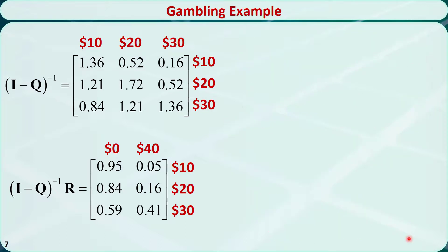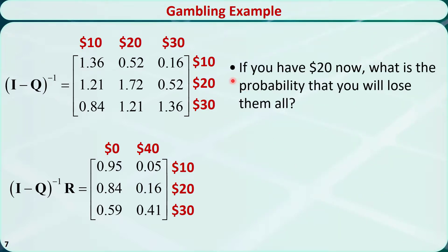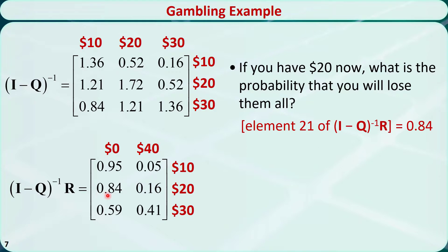Here are some more questions. If you have $20 now, what is the probability that you will lose them all? That means you will be absorbed by the state $0. The answer is element 2,1 of the fundamental matrix times R. It is 84%.